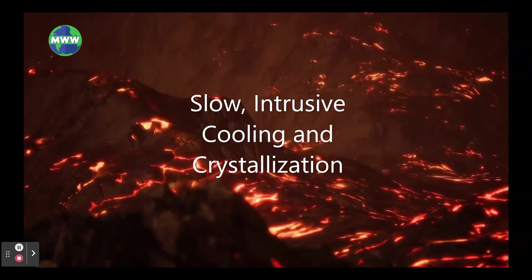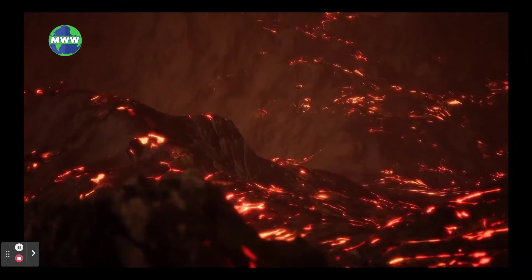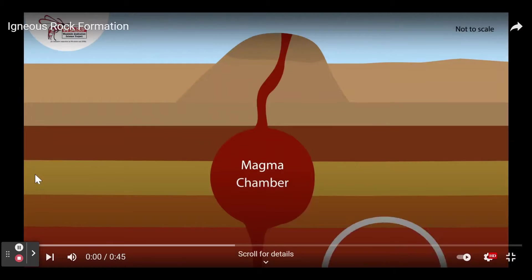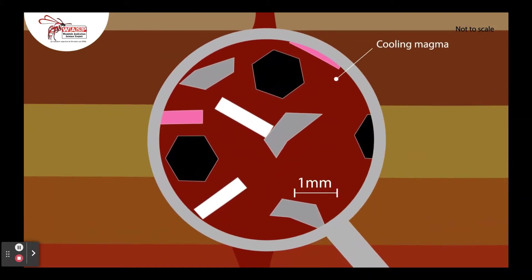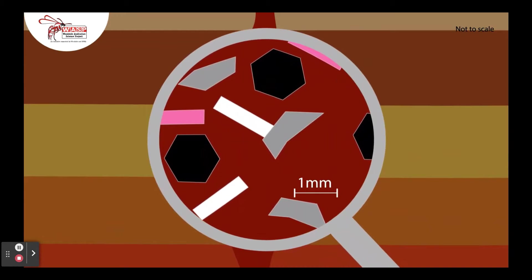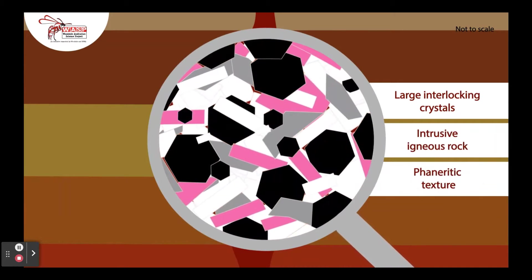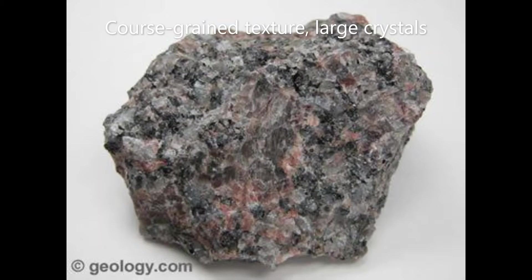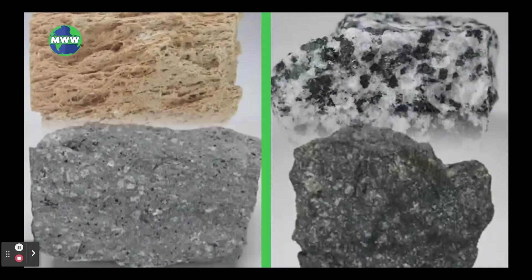Slow, intrusive cooling and crystallization. Molten, or melted, rock under the Earth's crust is called magma. Under the Earth, magma cools slowly, allowing the minerals time to combine and form crystals. This gives them a coarse-grained texture with large crystals.